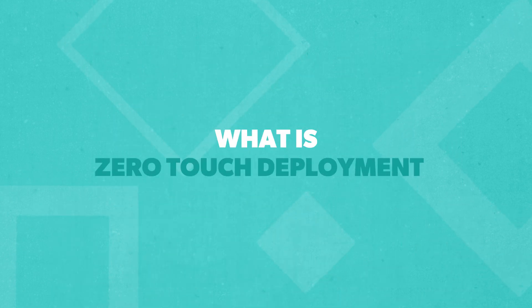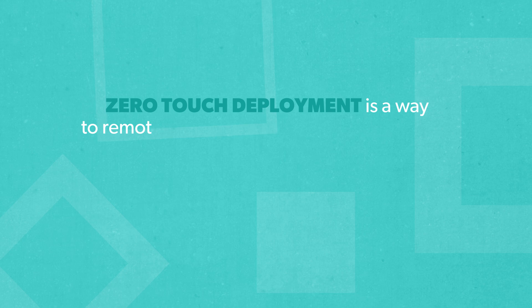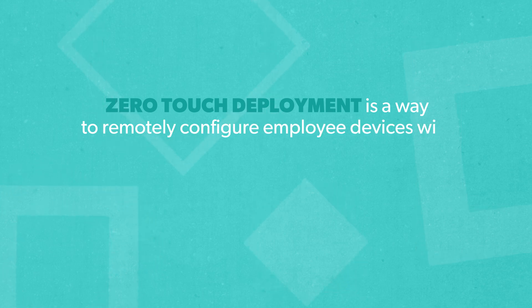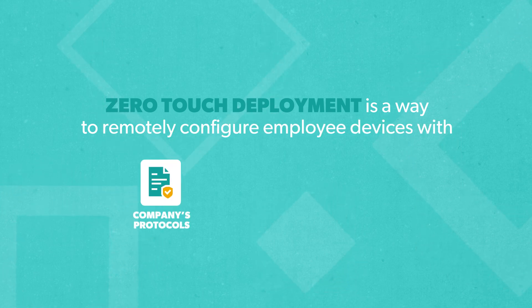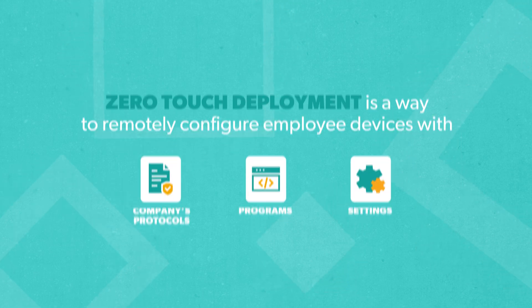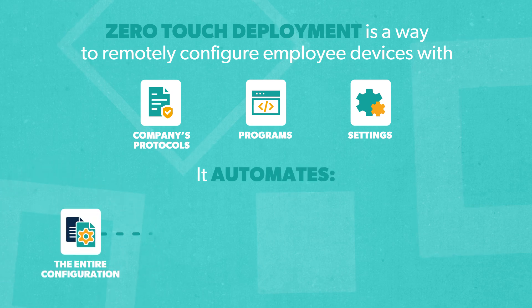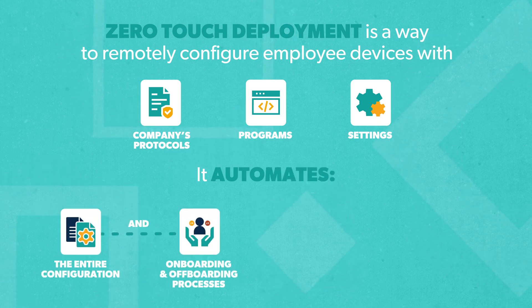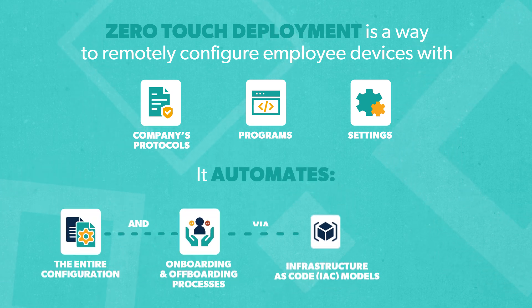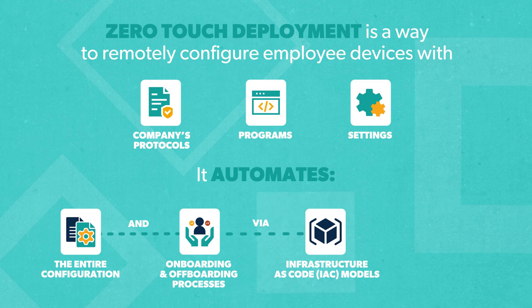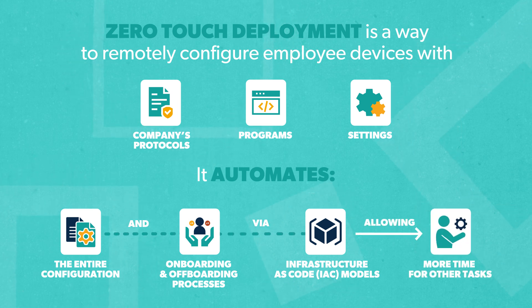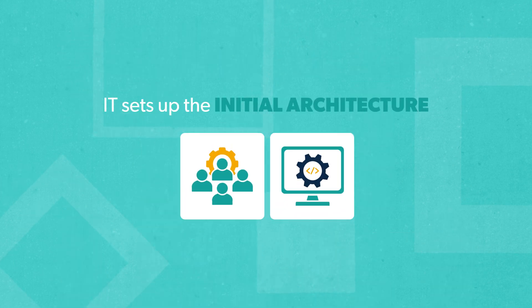So what is zero-touch deployment? Zero-touch deployment is a way to remotely configure employee devices with your company's protocols, programs, and settings. Zero-touch automates the entire configuration, onboarding, and offboarding process through infrastructure as code, or IAC models, freeing up IT and MSP teams to handle other tasks.